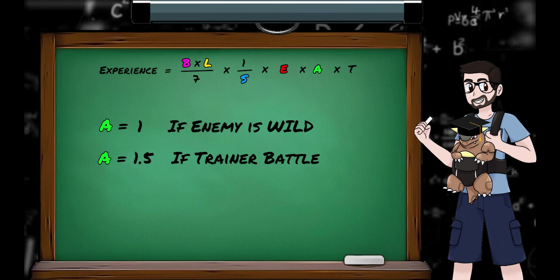Onto A. This is set to 1 if the Pokemon you defeat is wild, and set to 1.5 if it's a trainer fight. I've got no idea what A actually stands for, but all we need to know is that if defeating a wild Rattata gives you 100 experience, defeating a trainer owned Rattata of the same level would give you 150 experience.